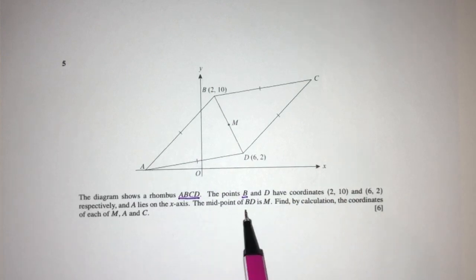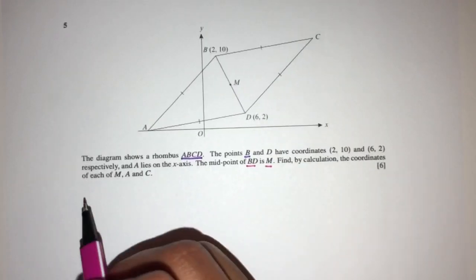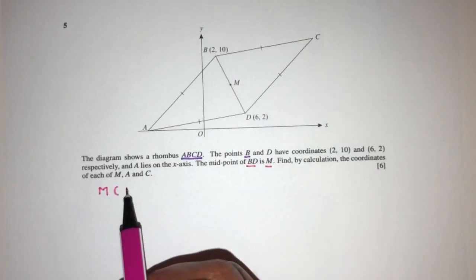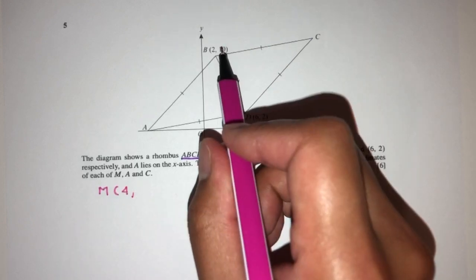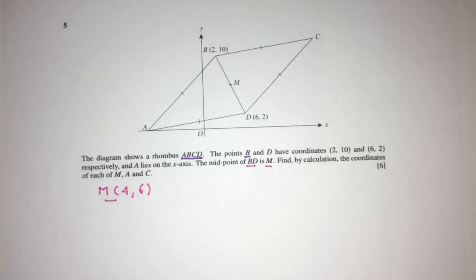Now, we know the midpoint of B, D is M, right here, so we can find M pretty easily. M is the midpoint, that will be X1 plus X2, that will be 8 divided by 2, will be 4. Y1 plus Y2, that will be 12 divided by 2, will be 6. So this is the midpoint M of the rhombus.